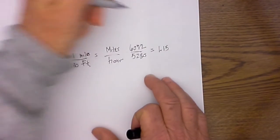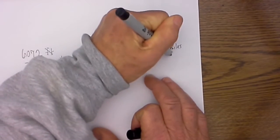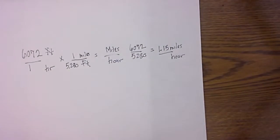I then divide 6072 by 5280, and that will equal 1.15, and my unit of measure is miles per hour.